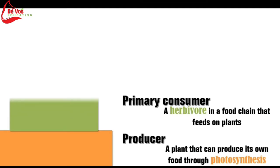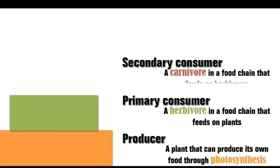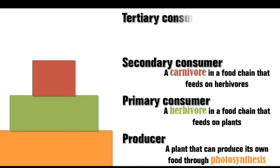Consumers can be classified as either primary, secondary, or tertiary depending on which stage of the food chain they are at. For example, a secondary consumer consumes primary consumers but is in return consumed by tertiary consumers.